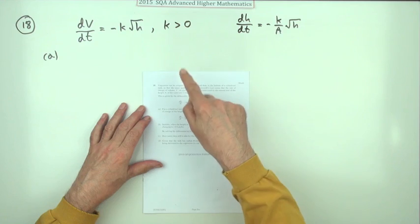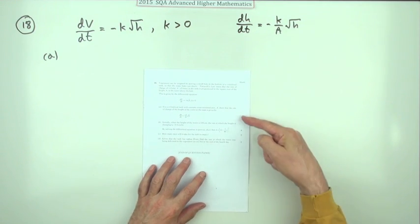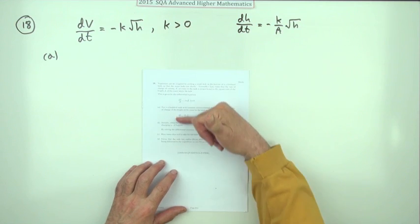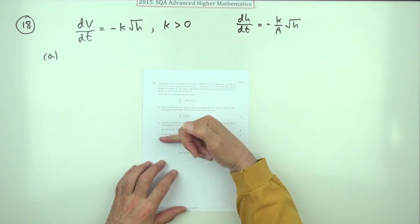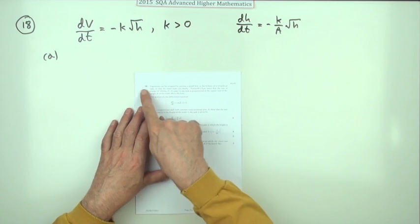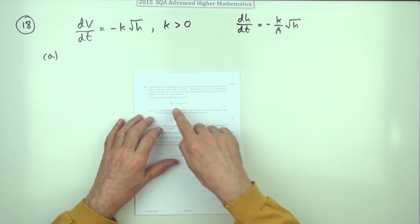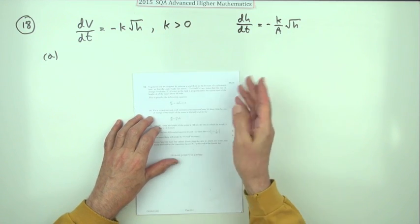So question 18 then, the last question in the 2015 Advanced Higher Maths, 11 marks here, a big wordy question. But obviously it steps you through it. Here, vegetation can be irrigated by putting a small hole in the bottom of a cylindrical tank so the water leaks out and did it good.